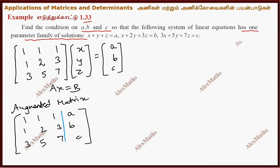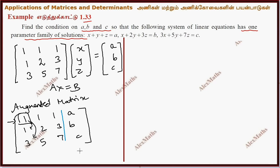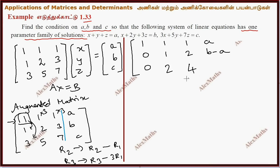Now we have row echelon form. Row 2: row 2 minus row 1. Row 3: row 3 minus 3 times row 1. Row 1 as it is. Row 2: 0, 1, 2, b minus a. Row 3: 2, 2, 4.